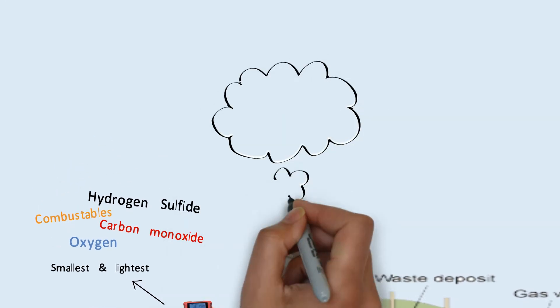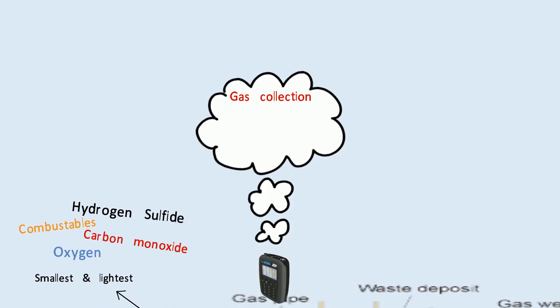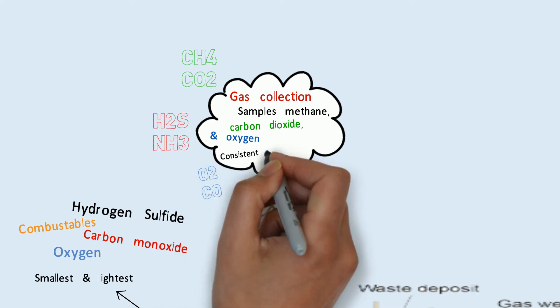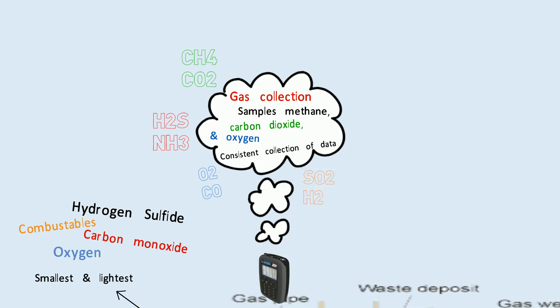Landtech GEM5000, used for gas collection and control systems. It samples methane, carbon dioxide and oxygen contents of landfill gas. The user is able to set up comments to record information at each sample point, ensuring a consistent collection of data.